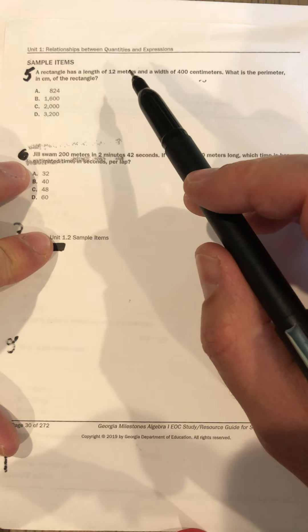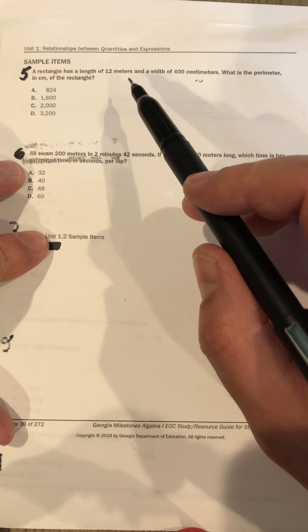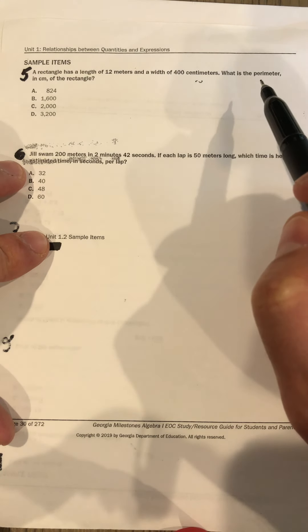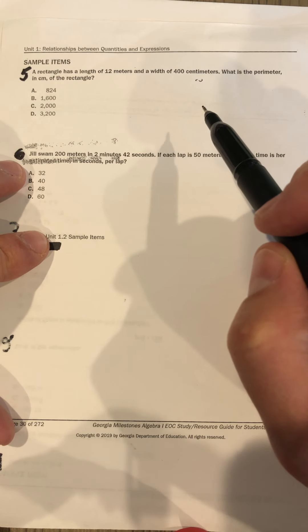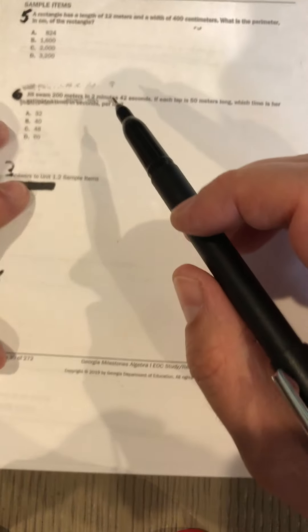And if I want perimeter, I'm looking for adding up all four sides of that rectangle. Okay. Okay, number six.